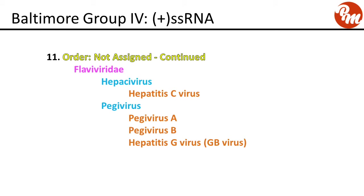In the same family Flaviviridae, genus hepacivirus includes hepatitis C virus. Genus pegivirus includes pegivirus A, pegivirus B, and hepatitis G virus (GB virus).